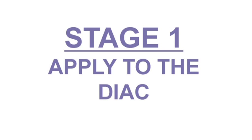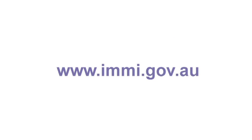The first stage is to make an application for a protection visa to the Department of Immigration and Citizenship — you may hear people call this the DIAC. To do this you need to complete Form 866, titled 'Application for a Protection Visa Class XA'. You can find this form on the DIAC website at www.immi.gov.au, or ask your lawyer or migration agent to help you find the form.